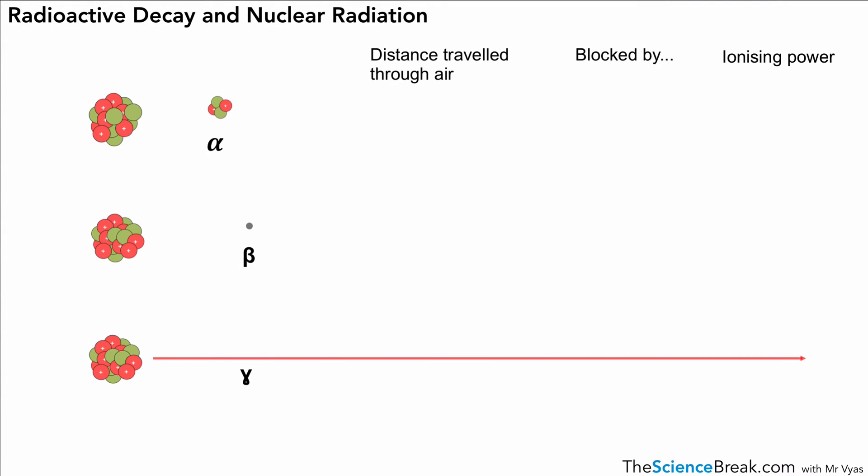Now we could take all that information and make a summary, an important summary of the characteristics of the different types of radiation. First, we have alpha radiation or alpha particles. They could travel about five centimeters through air, but they can be blocked simply by paper or even by skin. The ionizing power, as we saw, is high.